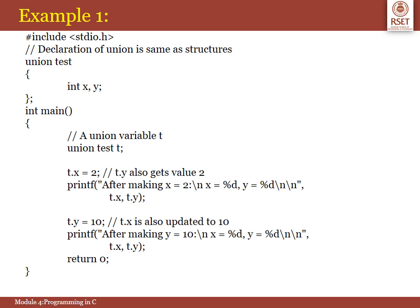Now we will see one example. Here we are defining a union named test with variables x and y. Both x and y are integer type, and in the main function, like structure, we are defining a variable for that union using the union keyword followed by the name of the union then followed by the union variable. First we are giving a value 2 to the variable x, and while printing x and y we will get the same value for both. Then we are making the value of y as 10 and printing both x and y again.